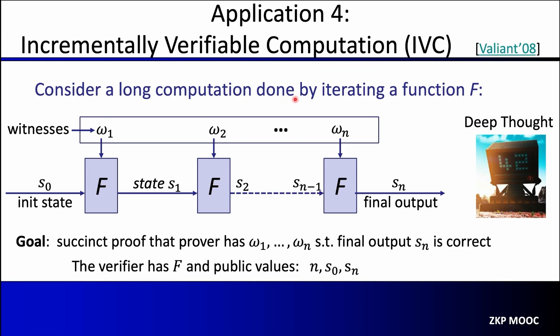Since we mentioned long computations done by iterating a function f, I can't resist the connection to Deep Thought from The Hitchhiker's Guide to the Galaxy. The civilization asked the computer what's the meaning of life, the universe, and everything. Deep Thought said it would take 7 million years to figure out the answer. It worked for 7 million years — a very long computation — and at the end said the answer is 42. That's an example of a long computation for which one might want a succinct proof that the computation was done correctly.